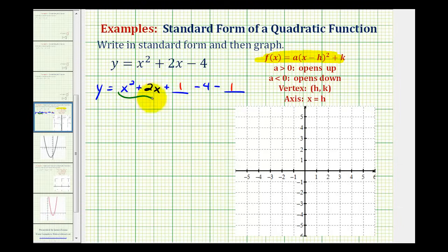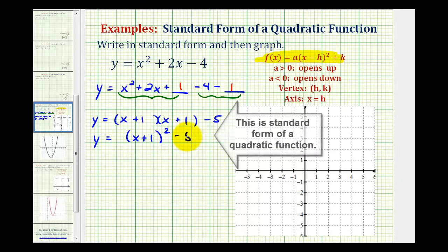Now we're going to factor this trinomial, and then combine the terms here. So we'll have y equals, again this will factor into 2 binomial factors, and then we'll have minus 5. So the factors of x squared go here and here, and the factors of positive 1 that add to positive 2 would be positive 1 and positive 1. So we have plus 1 here and plus 1 here. Notice how we have a perfect square trinomial, so we can write this as y equals the quantity x plus 1 squared, minus 5.